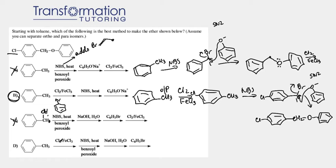If you look at choice D: I have Cl2 FeCl3 so I attach chlorine para to CH3, then NBS heat so I put bromine here on CH2. Then I have NaOH water, so my bromine gets replaced by OH in an SN2 reaction. Again, I come to the same problem—the bromine here is attached directly to the benzene ring and it's not easy to replace. There are special reactions called nucleophilic aromatic substitution reactions that would have to replace it, but not in this case.